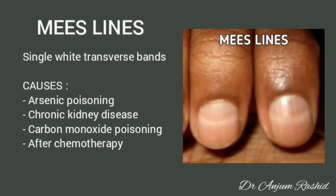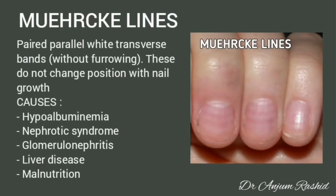Mees lines: single white transverse bands on the nail. Causes include arsenic poisoning, chronic kidney disease, carbon monoxide poisoning, and sometimes after chemotherapy. Muehrcke lines: these are paired parallel white transverse bands without furrowing. These do not change position with nail growth. Causes include hypoalbuminemia, nephrotic syndrome, glomerulonephritis, liver disease, or malnutrition.